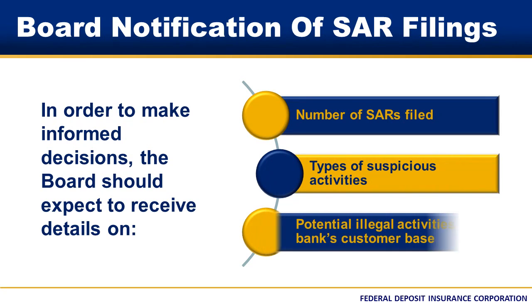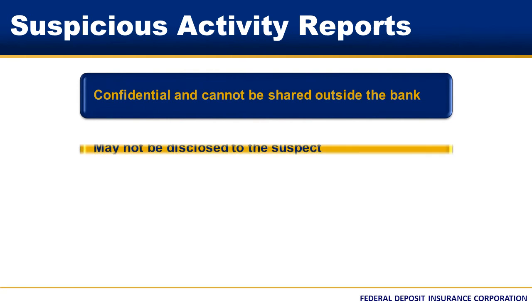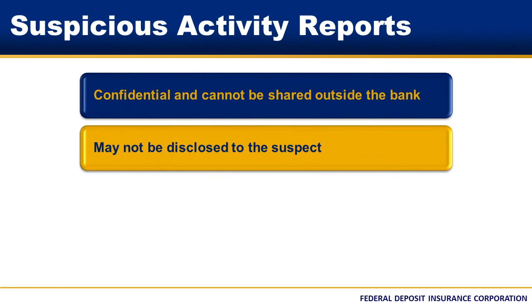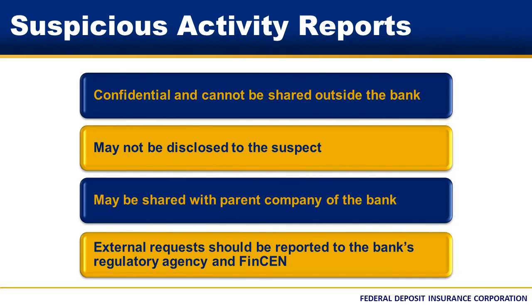The board should also have knowledge of potential illegal activities in the bank's customer base. For example, if a SAR had been filed on a large loan customer that was applying for a new loan, the board would likely need this information to make an informed decision on whether or not to extend additional credit. SARs are confidential and cannot be shared outside the institution or disclosed to the suspect. However, under guidance issued by FinCEN, SARs may be shared with the bank's parent entity. External requests for SARs, including subpoenas, should be reported to the bank's regulatory agency and FinCEN.